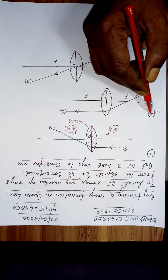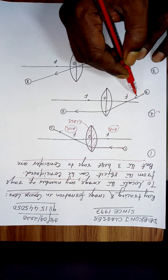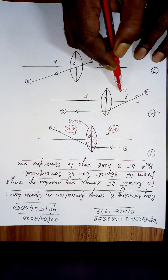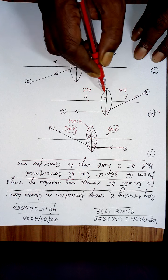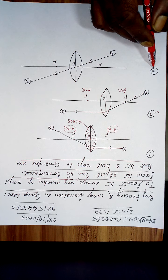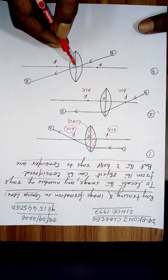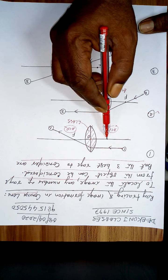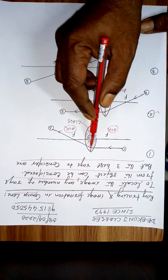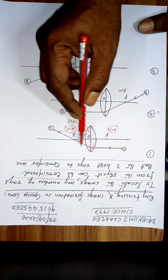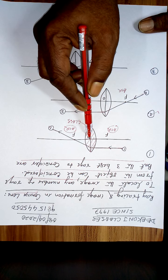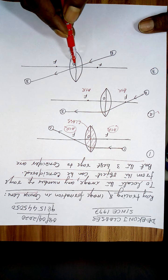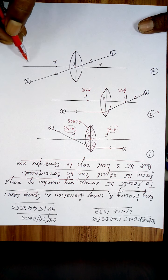The second best ray is a ray passing through the focus — after refraction it becomes parallel to the principal axis. The third best ray is a ray passing through the optical center, which goes undeviated. The distance from O to F is the focal length f, and the foci on both sides are equidistant from O.